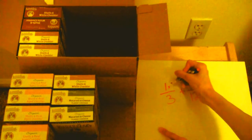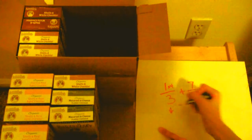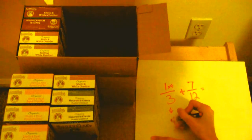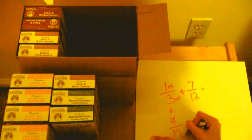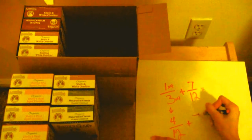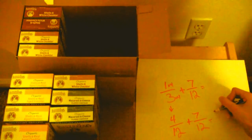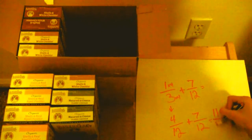Let's do one times four and I'm just gonna put this new fraction down here is four and three times four is twelve. So I have four twelfths plus seven twelfths. And then I have eleven twelfths.